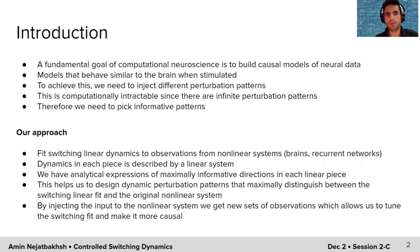Here is the approach that we propose. Instead of perturbing using all possible patterns, we first fit a switching linear dynamics to the observations from nonlinear systems. These nonlinear systems could be data from the brain, recurrent neural networks, or other nonlinear systems with analytical expressions. Once we fit a switching linear dynamical system to those observations, we know that the dynamics in each piece is described by a linear dynamical system. Now we're going to use the fact that we have analytical expressions for linear systems that give us maximally informative directions for each of the linear pieces.